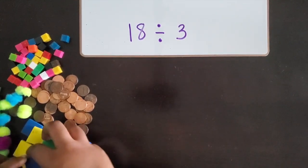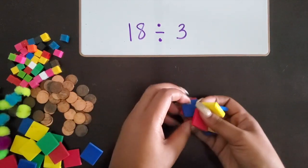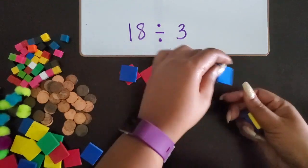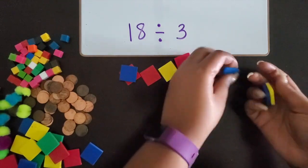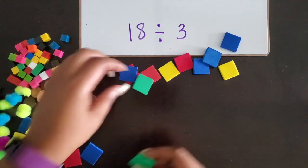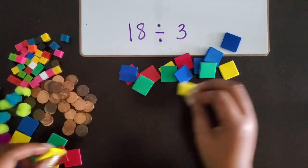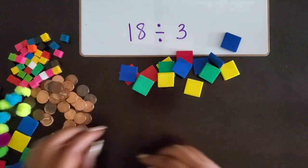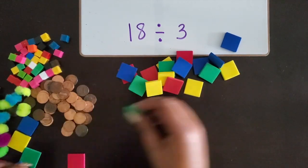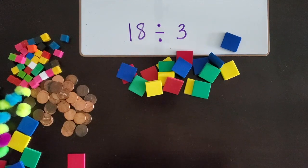I know I'm going to start with 18. I'm going to use these square tiles and count out 18: 1, 2, 3, 4, 5, 6, 7, 8, 9, 10, 11, 12, 13, 14, 15, 16, 17, and 18.